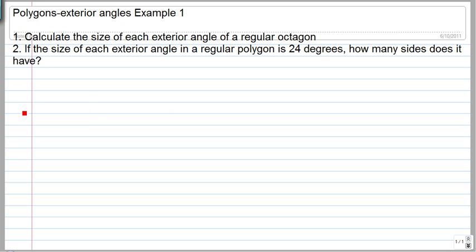Calculate the size of each exterior angle of a regular octagon. For a regular octagon, each side is equal to all the other sides, and it has eight sides. To calculate the size of each exterior angle: